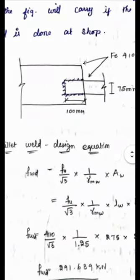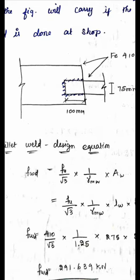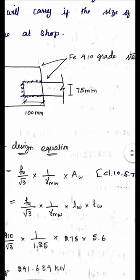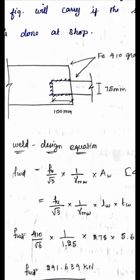Here the figure is given as two plates lap over each other. They are made up of FE 410 grade steel. The width of the smaller plate is given as 75 mm and the overlap length is given as 100 mm.